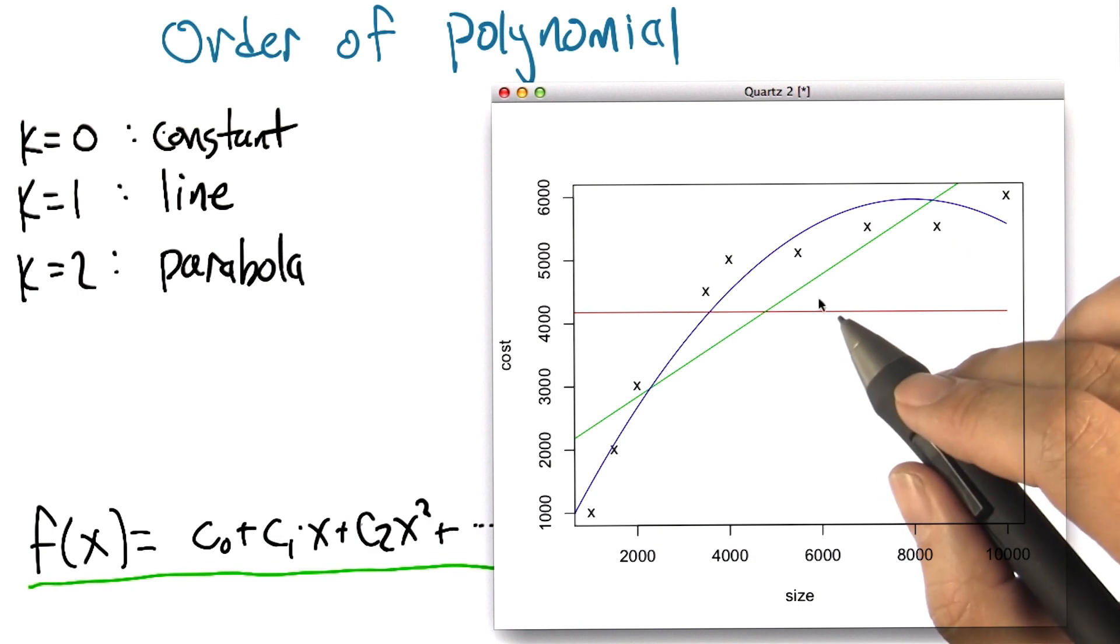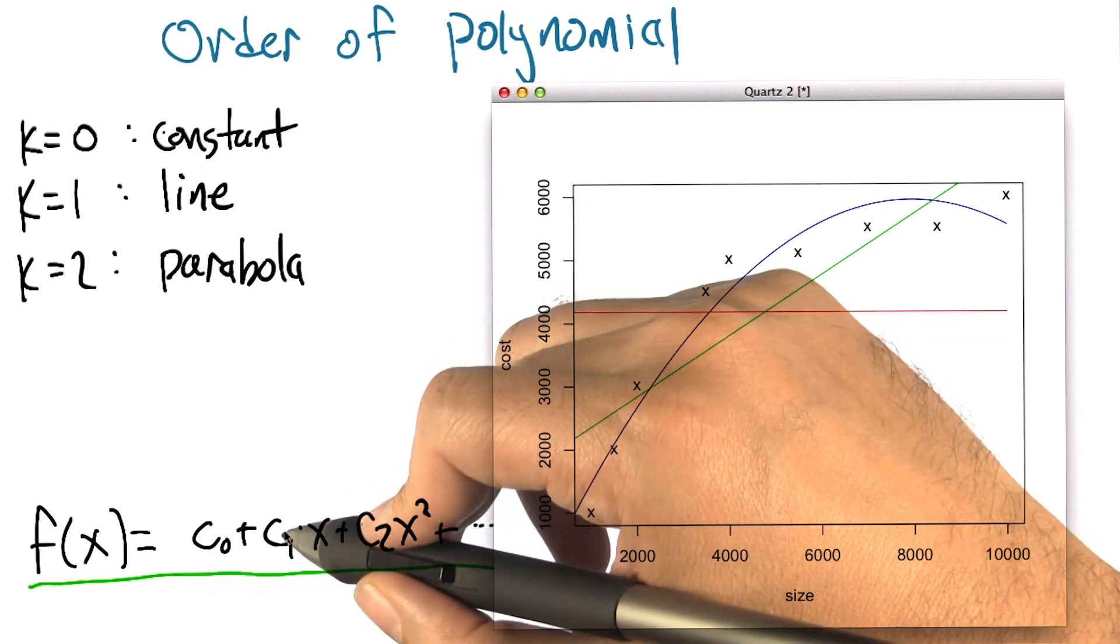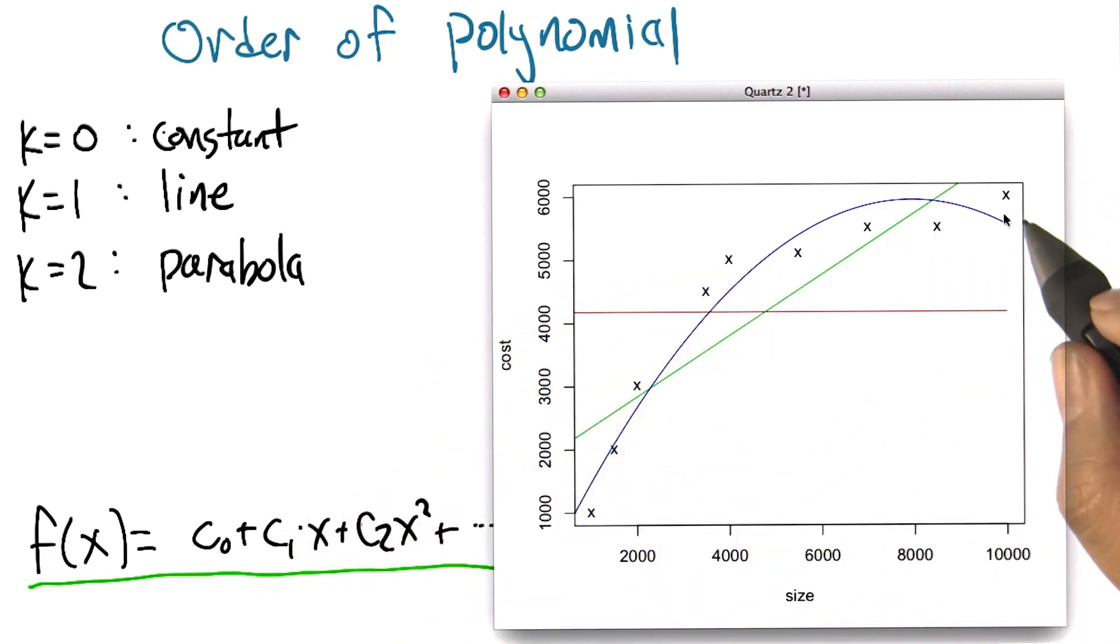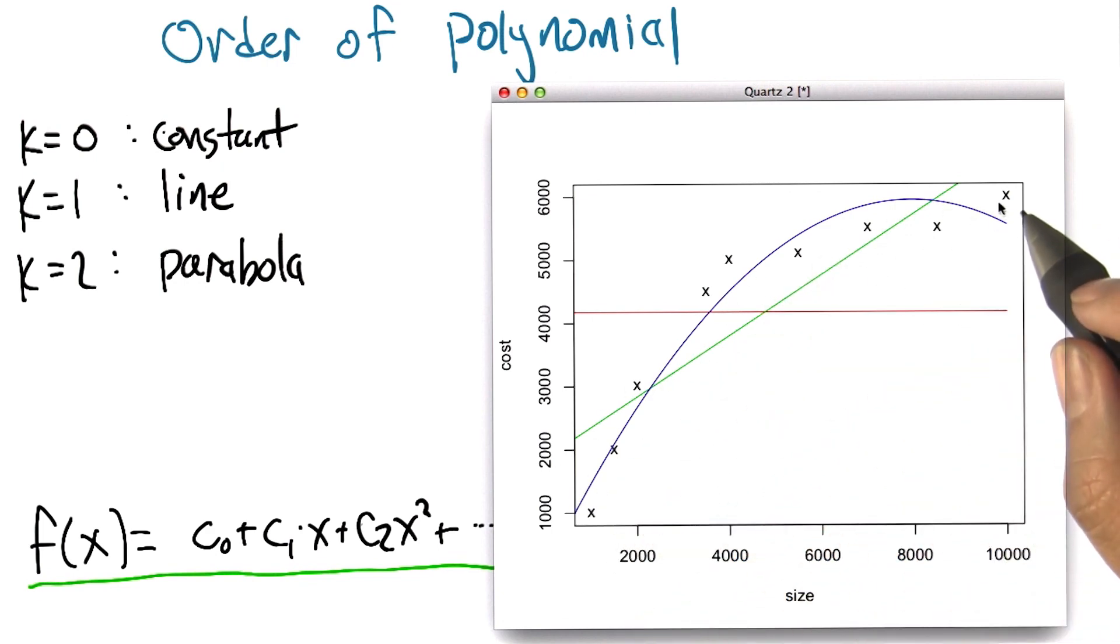at the worst, we could have just fit the parabola as a line, right? We can always just set any of these coefficients to zero. So if the best fit to this really was a line, the best fit to this data point was a line, then the parabola that we see here wouldn't have any curve to it.